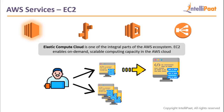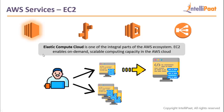In EC2 you can launch a single instance or multiple instances. You can also create an instance, install software on it, and then launch multiple copies so you don't have to reinstall everything. You can also increase the configuration — for example, upgrading from 8 GB to 16 GB of RAM. That's why it's called Elastic Compute Cloud: elastic means you can increase or decrease the instance configuration as and when required.